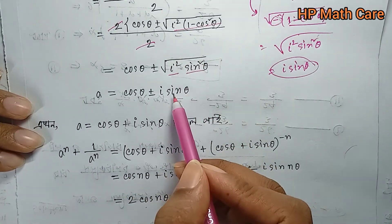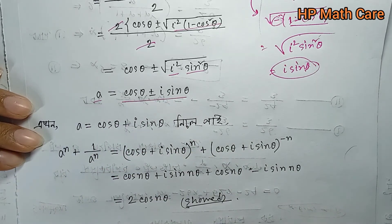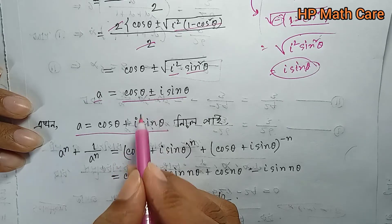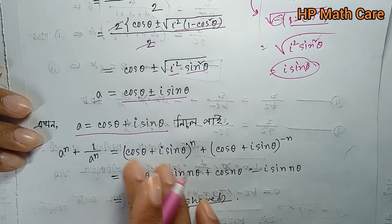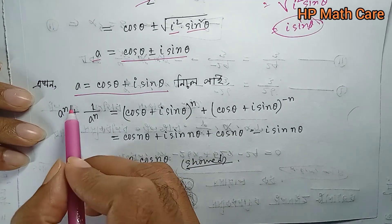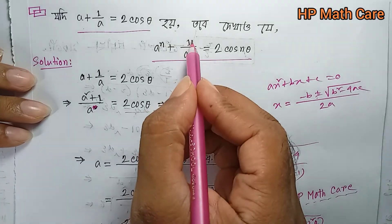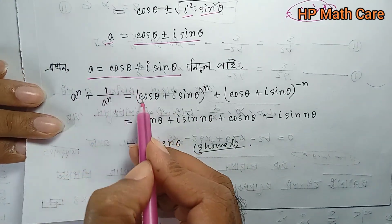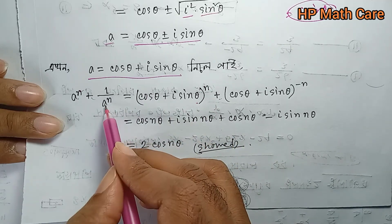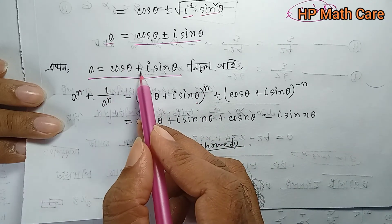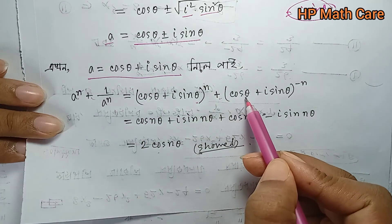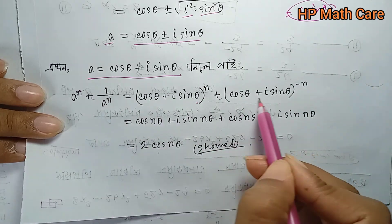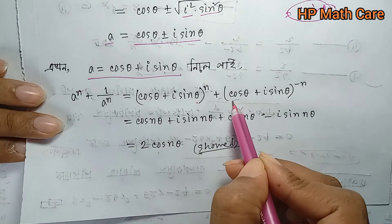By the identity, a equals cos θ plus or minus i sin θ. So a = cos θ + i sin θ. By De Moivre's theorem, a^n = cos(nθ) + i sin(nθ), and 1/a^n = cos(nθ) − i sin(nθ). Therefore a^n + 1/a^n = 2 cos(nθ). Since a + 1/a = 2 cos θ, we have proved that a^n + 1/a^n = 2 cos(nθ).